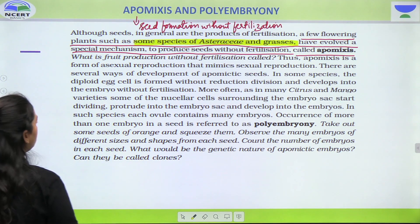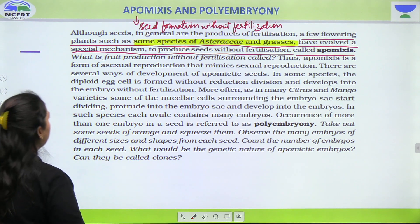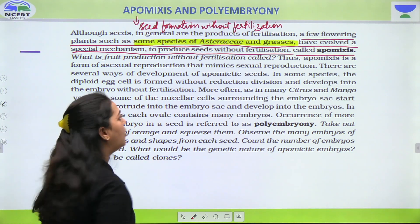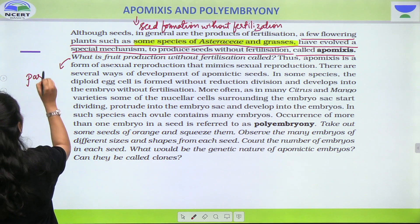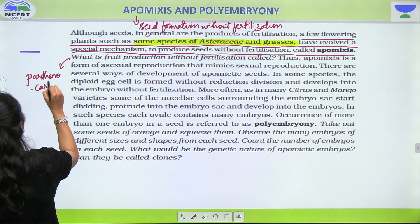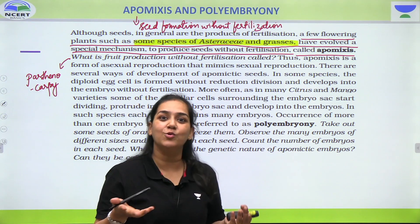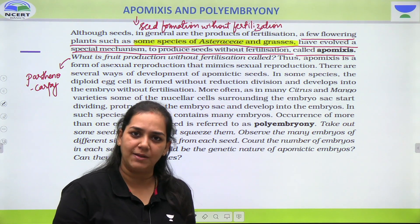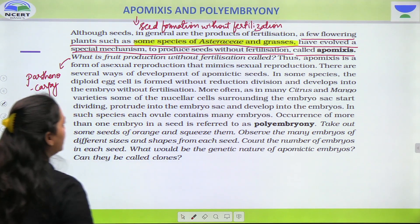That is what this statement is trying to tell you. Uske baad ek question bhi hai — what is fruit production without fertilization called? Toh iska answer kya hoga? Parthenocarpy. Dekha, NCRT ko pata hai aap confused ho jaoge, toh pehle hi unhone question de diya hai. Ye aap answer karlo — parthenocarpy likh lo. Toh you will be knowing the difference between the two.